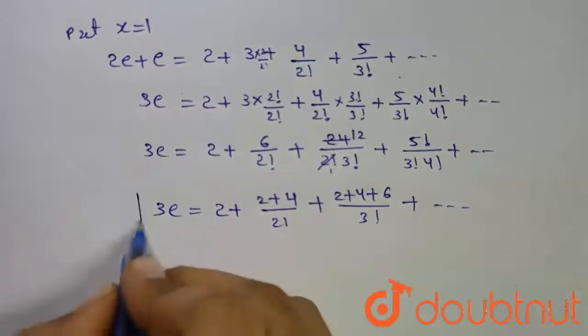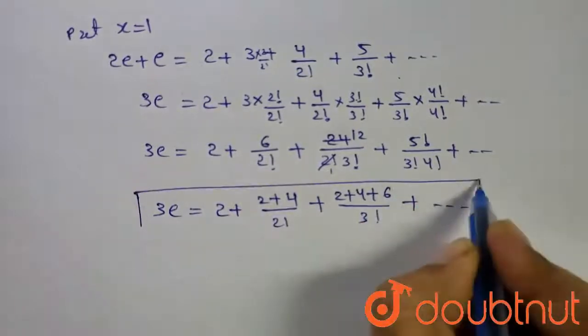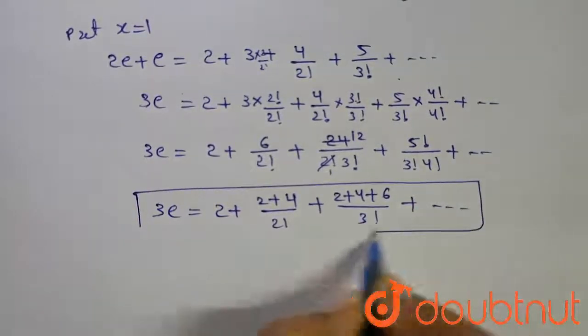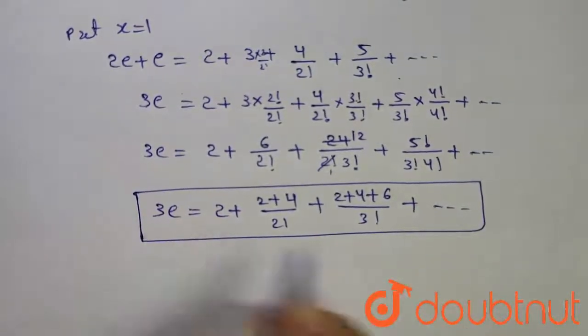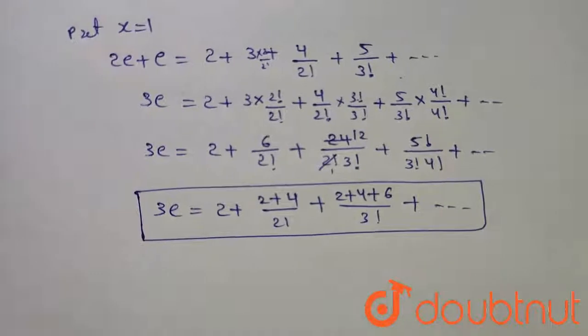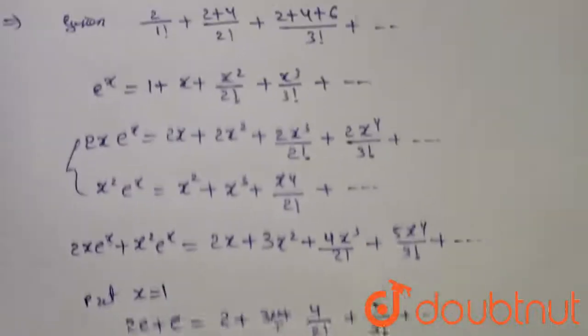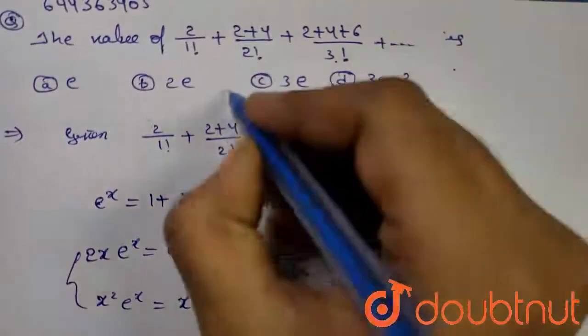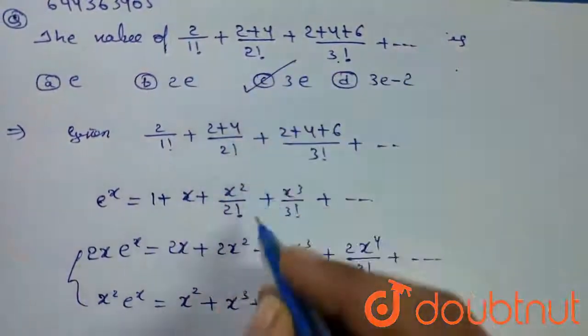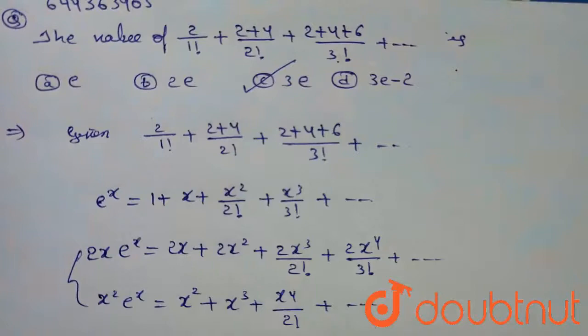Therefore, the value of the given question is 3e. Therefore, option C is the correct answer for this question.